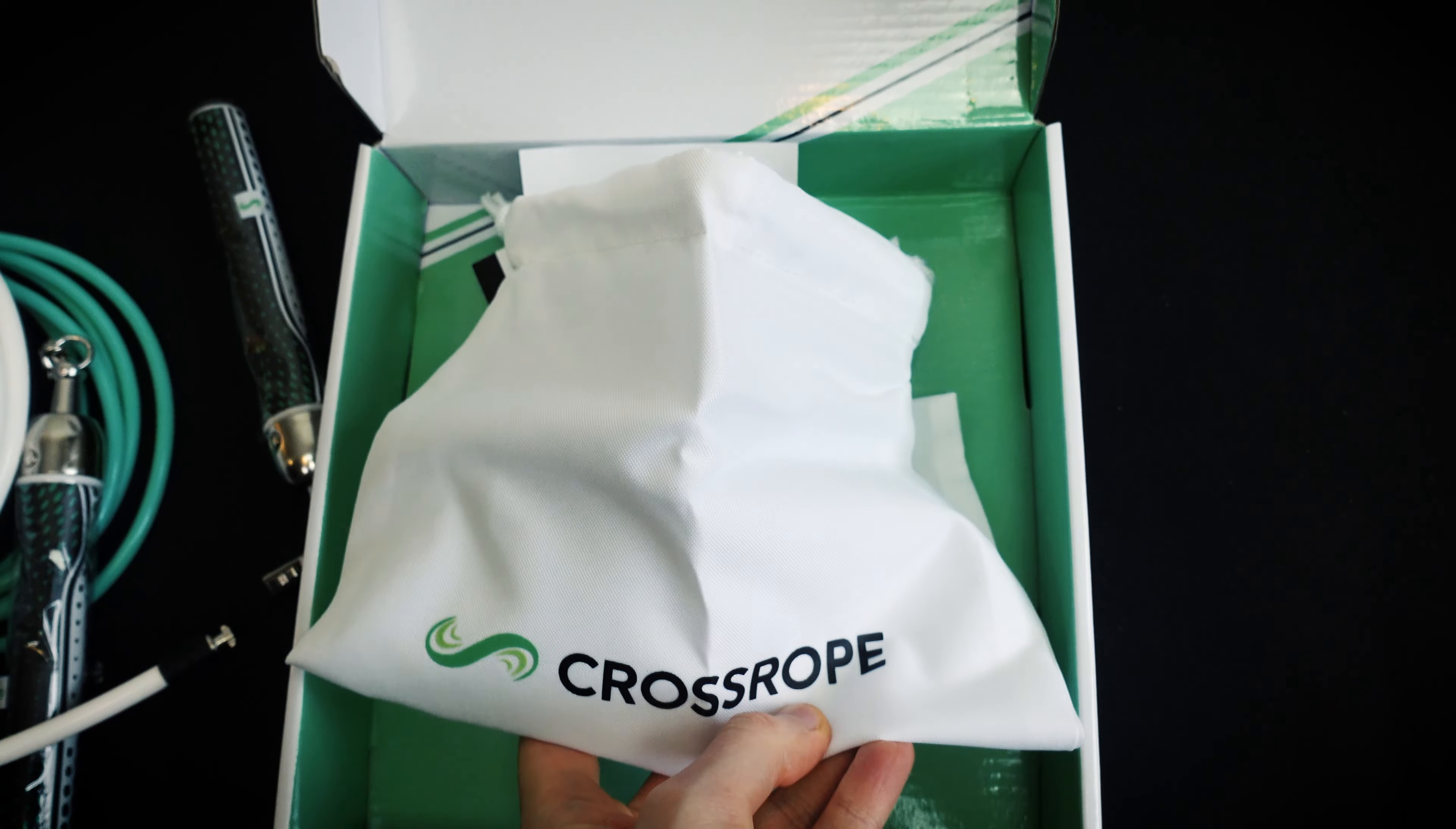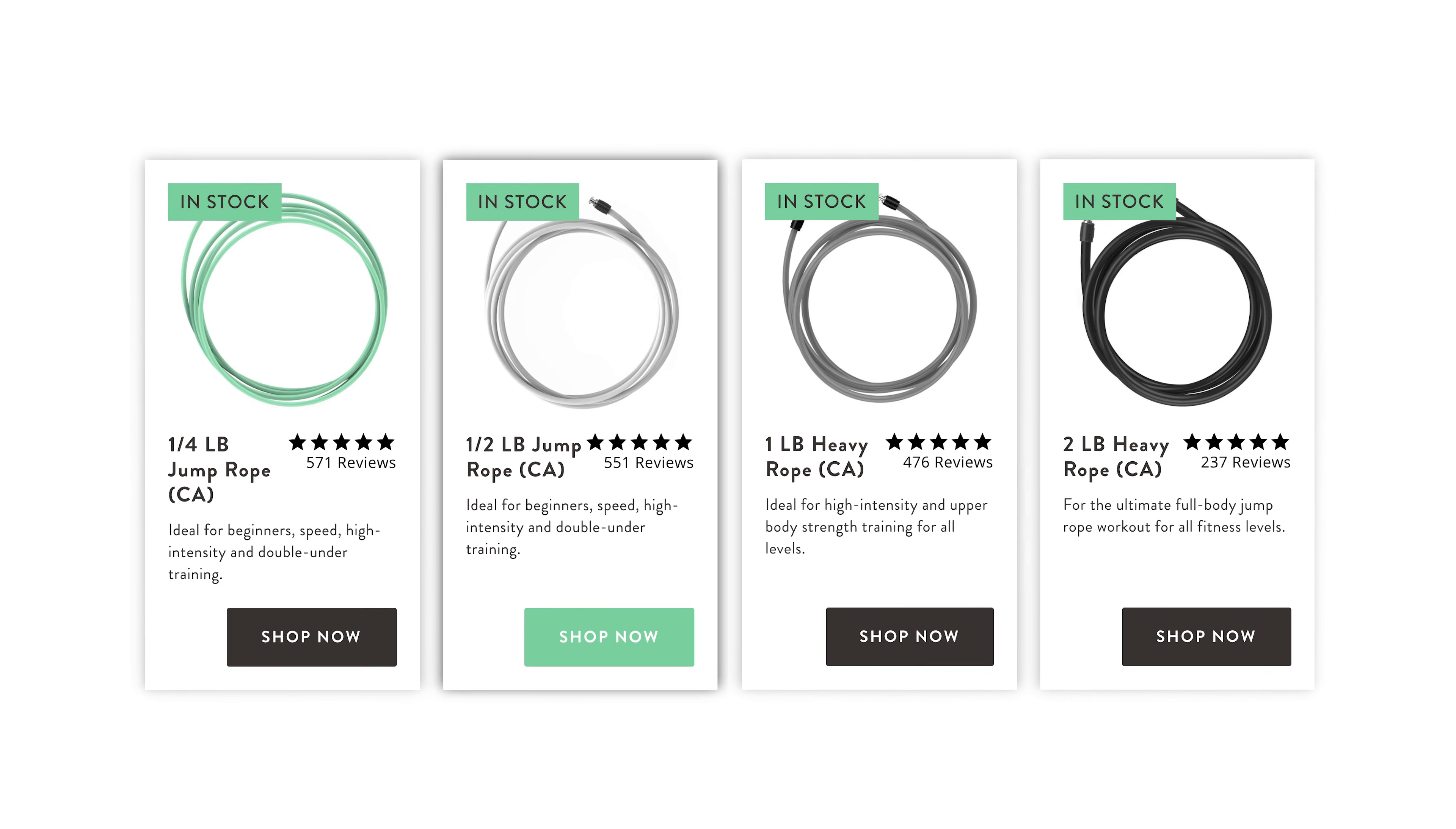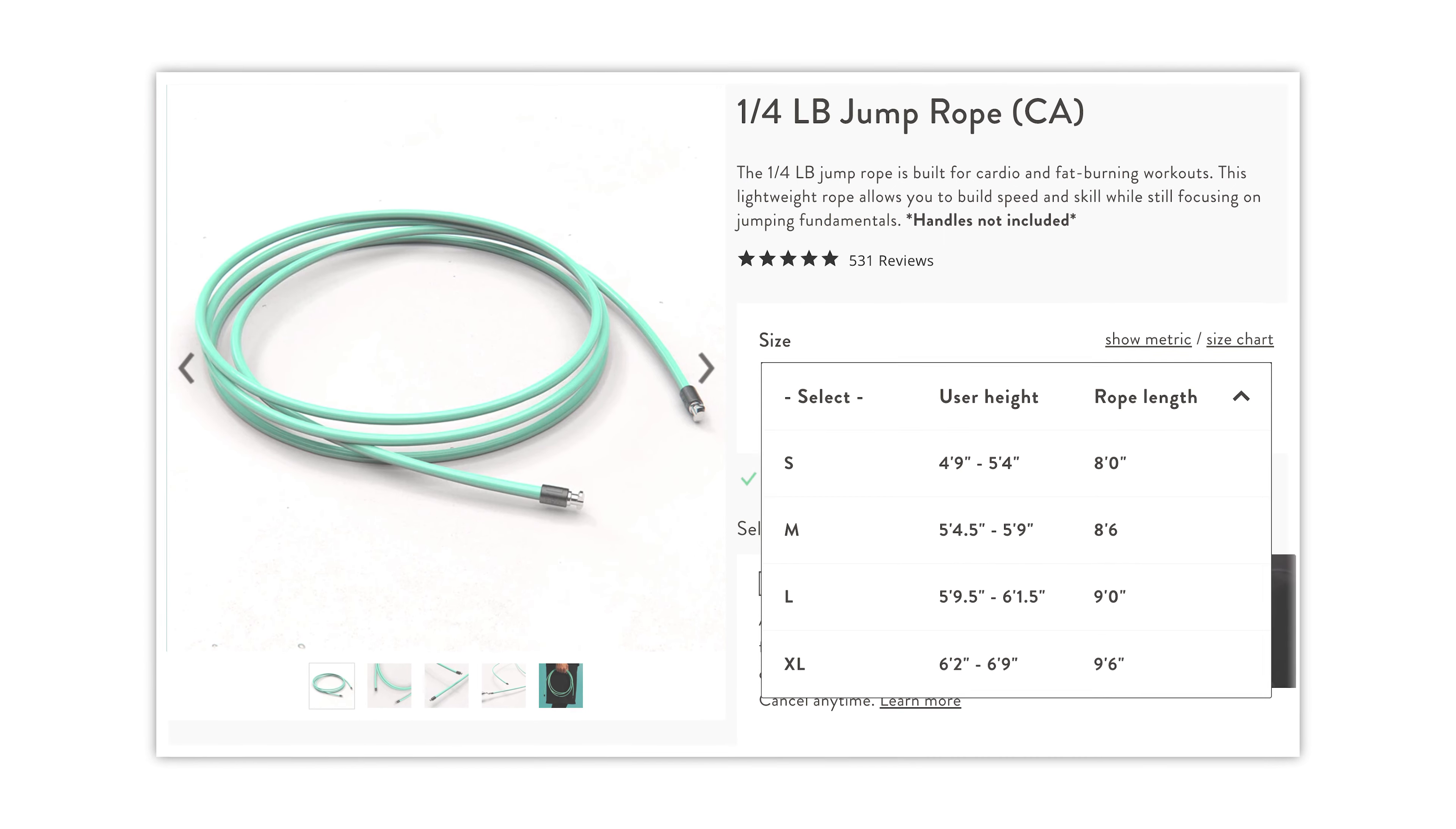The weight ranges of ropes available start from a quarter pound and go all the way up to two pounds. Now after selecting the weight of rope that you wish, you will then have the option to select from multiple lengths of rope to match your height. The height ranges start at four foot nine and go all the way up to ropes designed for people who happen to be seven feet tall.